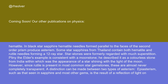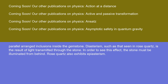A distinction can be made between two types of asterism. Epiasterism, such as that seen in sapphire and most other gems, is the result of a reflection of light on parallel arranged inclusions inside the gemstone. Diasterism, such as that seen in rose quartz, is the result of light transmitted through the stone; in order to see this effect, the stone must be illuminated from behind. Rose quartz also exhibits epiasterism.